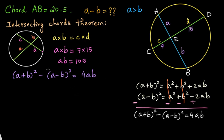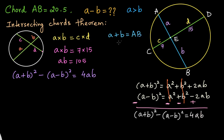Now let's make use of this identity. We know the product AB, which we calculated as 105. We want to find A minus B. What is A plus B? As you can see in the diagram, A plus B is nothing but the length of chord AB — it is the sum of the two parts AE plus EB. So A plus B is the length of chord AB, which is already given as 20.5.